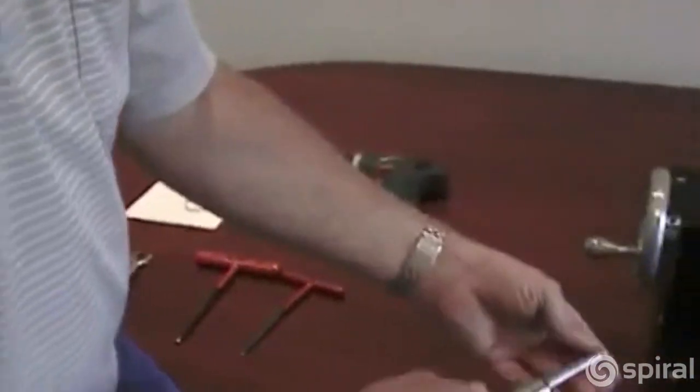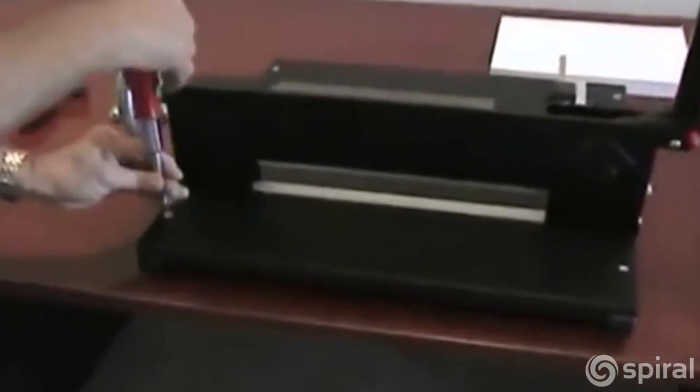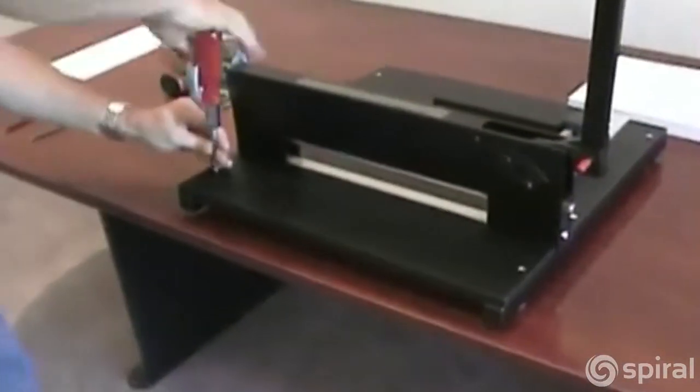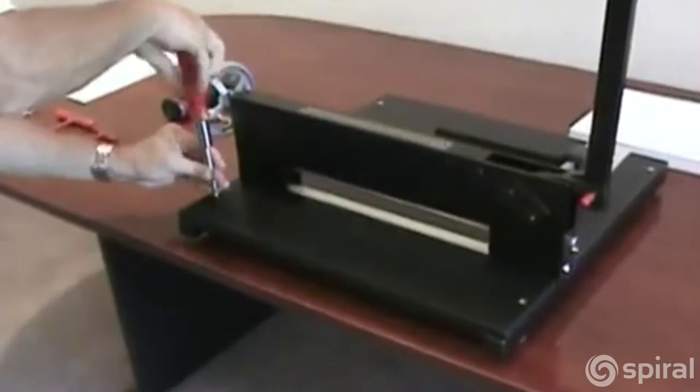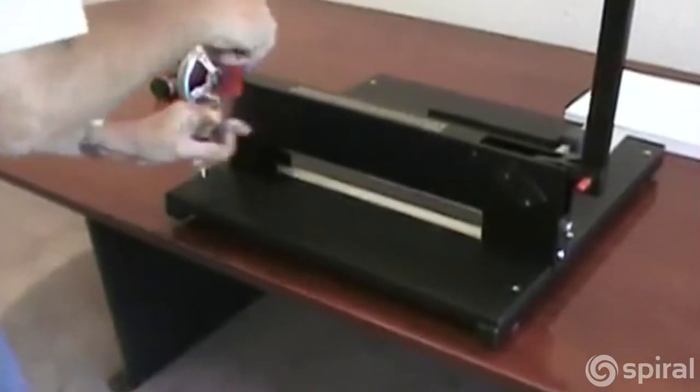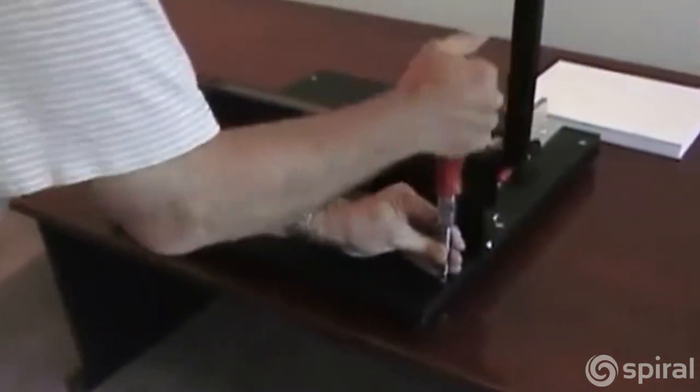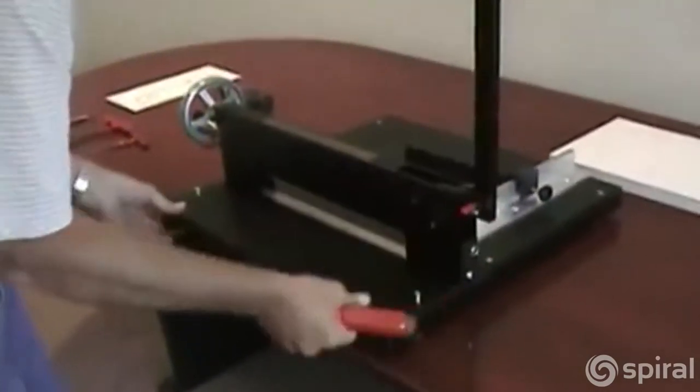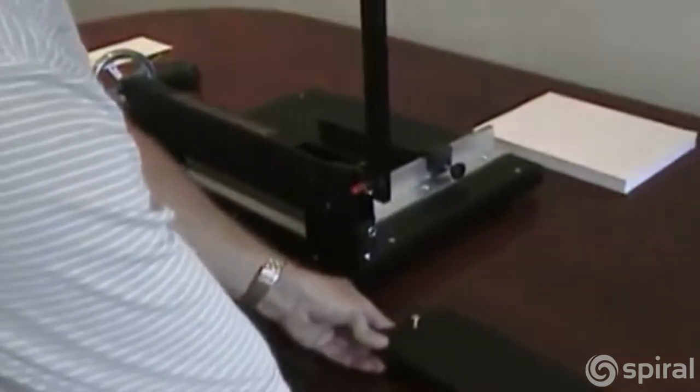To start, let's remove the front panel, the front deck. This is required to gain access to other clamp bolts. Set this aside.